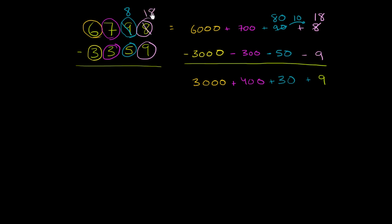And now you can subtract. 18 minus 9 is 9. 8 minus 5 is 3. 7 minus 3 is 4. 6 minus 3 is 3. 3,439.